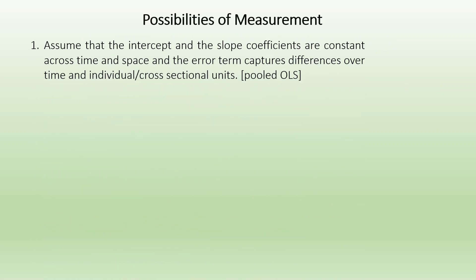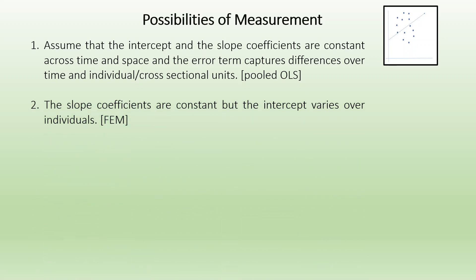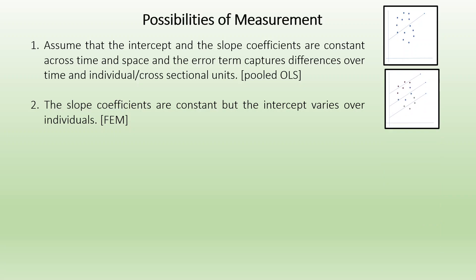The first possibility is we assume that the intercept and the slope coefficients are constant across time and space, and the error term captures differences over the time and individual cross-section units. This is known as the pooled OLS. The next method is the slope coefficients are constant but the intercept varies over the individuals — that is the fixed effects method (FEM).